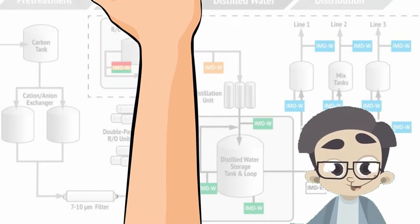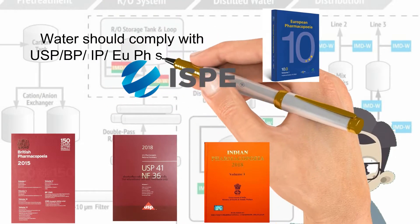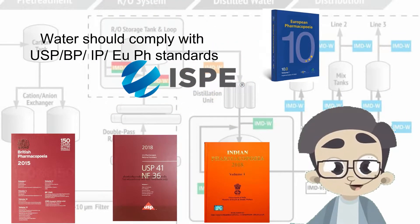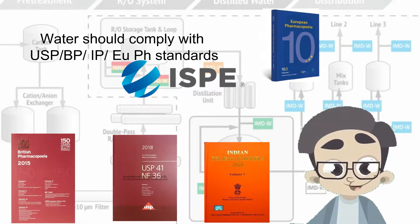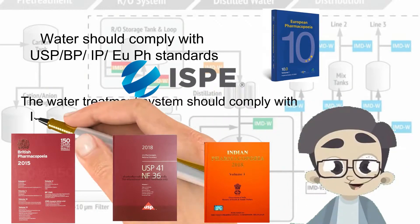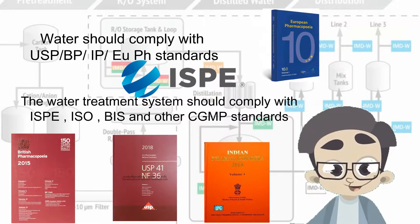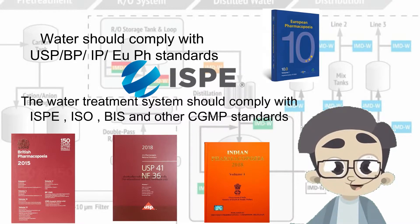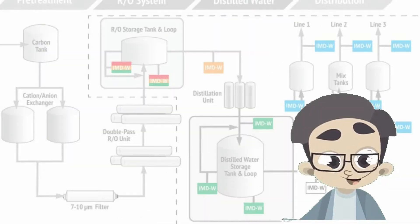Water from the treatment systems needs to comply with USP, BP, European Pharmacopoeia, and IP standards as the case may be. The water treatment systems also need to comply with cGMP requirements, ISPE guidelines, etc.